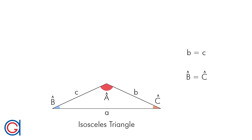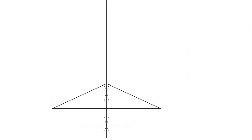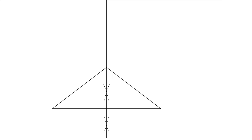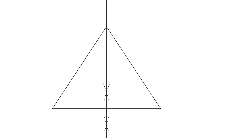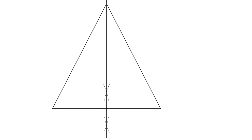The third angle A is always located opposite the only unequal side, which happens to always be located on the perpendicular bisector of this unequal side, as can be seen here in this animation.